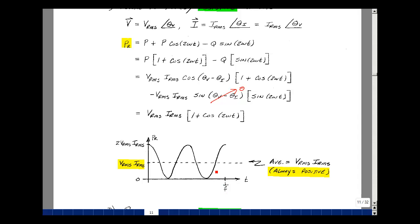Now, this is always a positive number, and the average value would be right here in the center, which is equal to V_RMS times I_RMS.